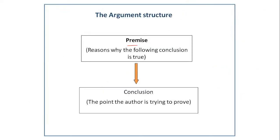Let's see the structure of an argument. Premises are the reasons why you are saying the conclusion is true — the premise is the reason because of which you are concluding. Conclusion is the point that the author is trying to prove. So an argument structure has premises, which are the reasons why the conclusion is true, and the conclusion is the point the author is trying to prove.